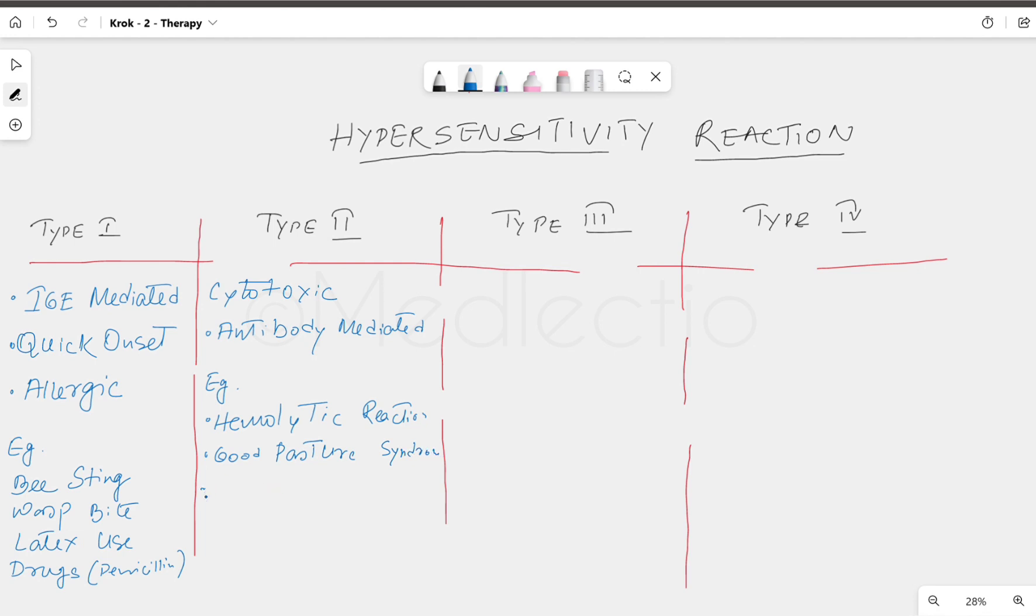Type 2 is antibody-mediated hypersensitivity reaction. Examples: hemolytic anemia, Goodpasture syndrome—here antibody attacks the basement membrane of kidney and lungs—hyperacute graft rejection (remember the term hyperacute, immediate graft rejection), and antibody mediators are IgG and IgM.